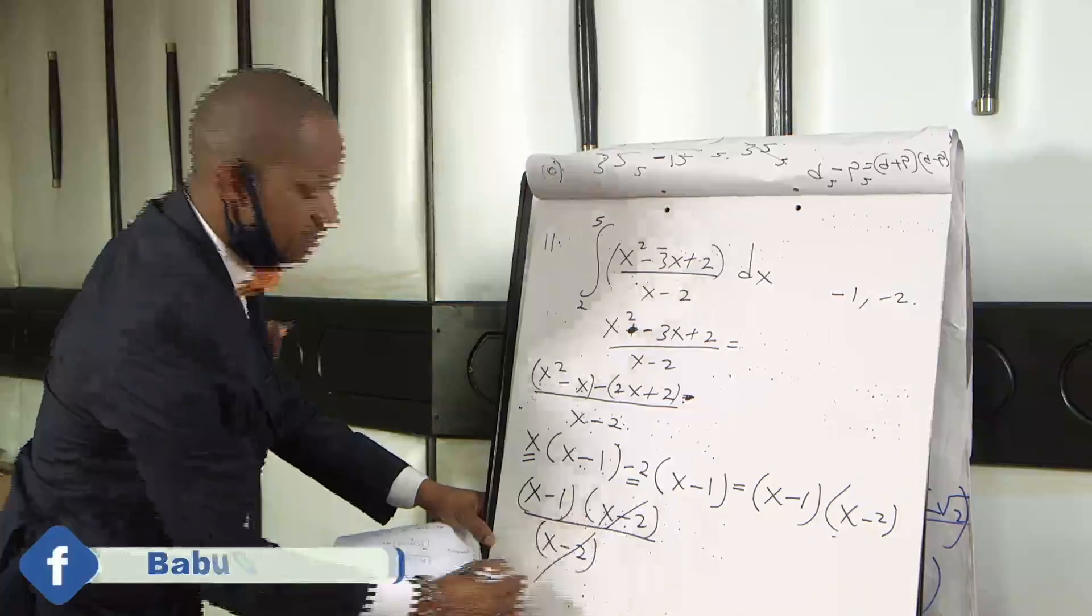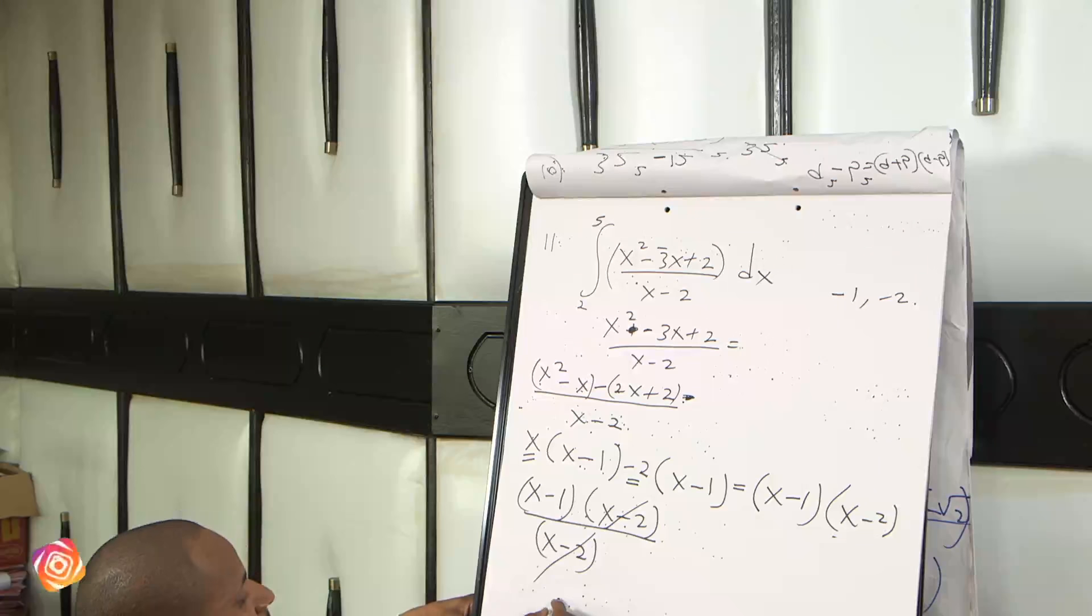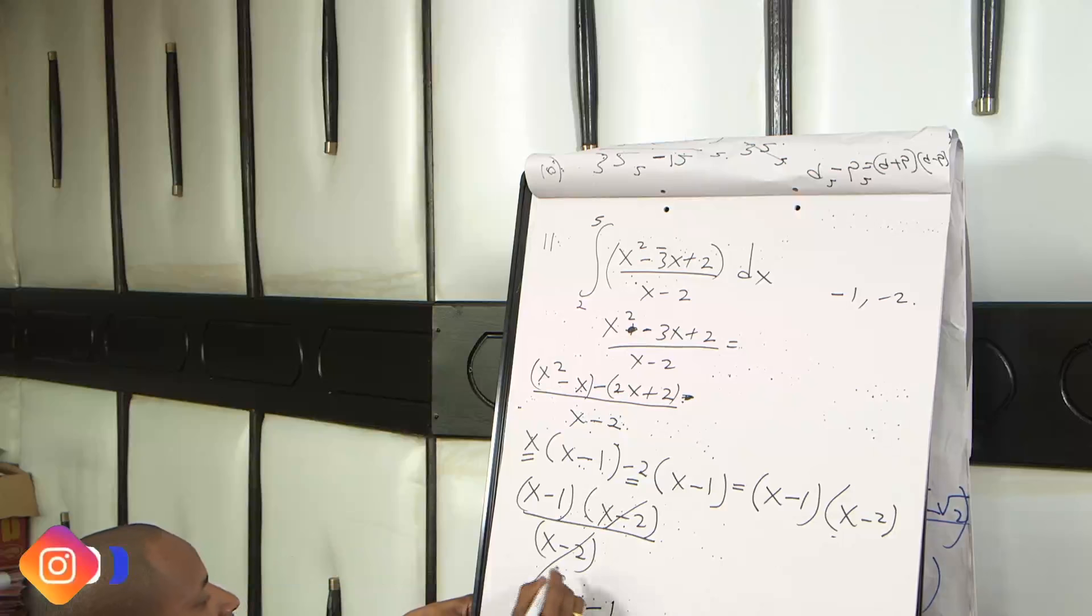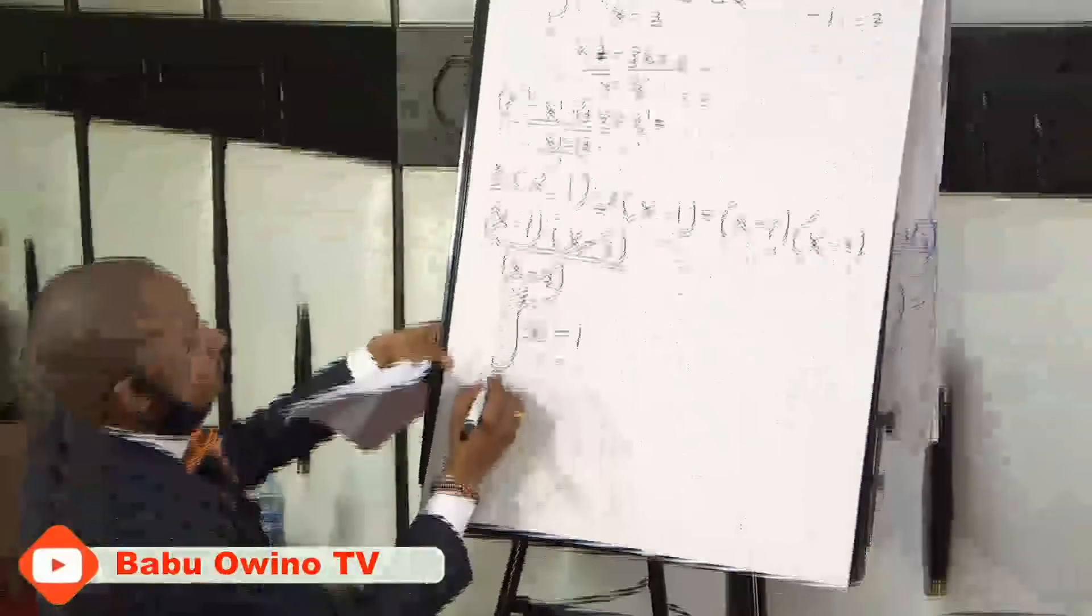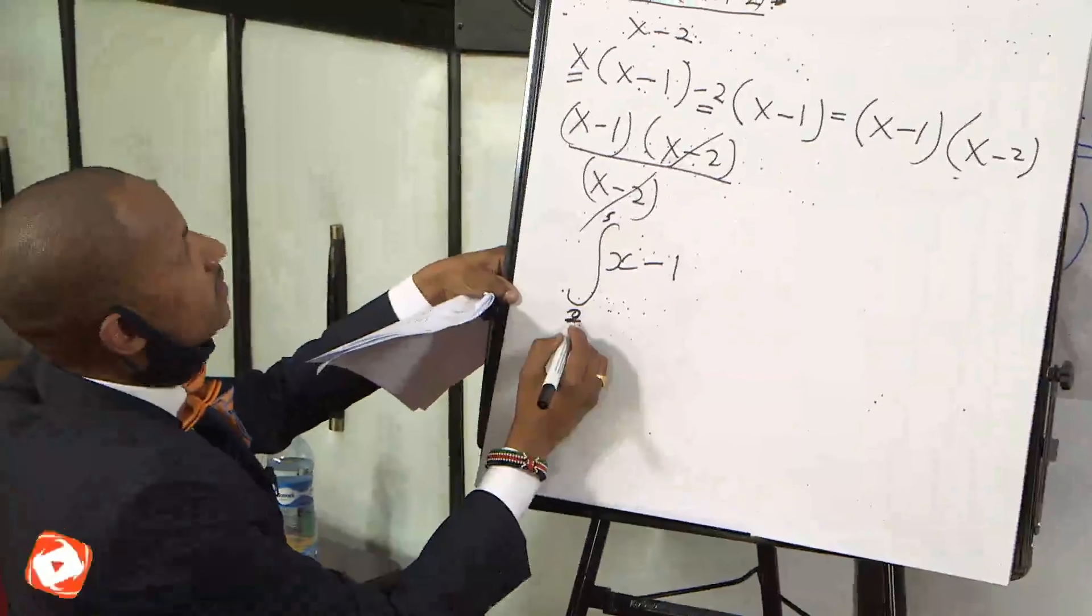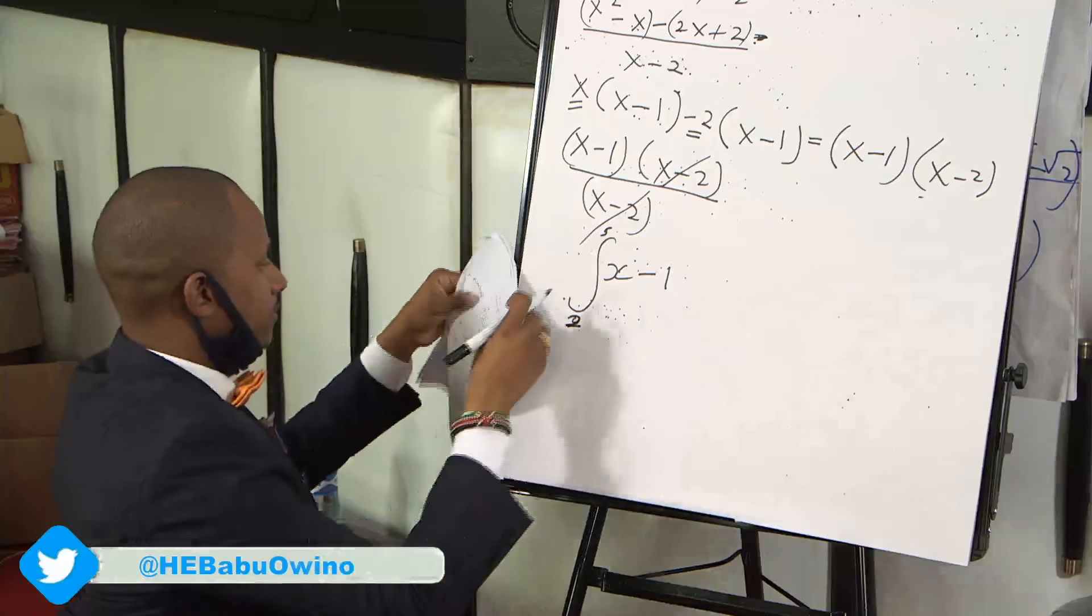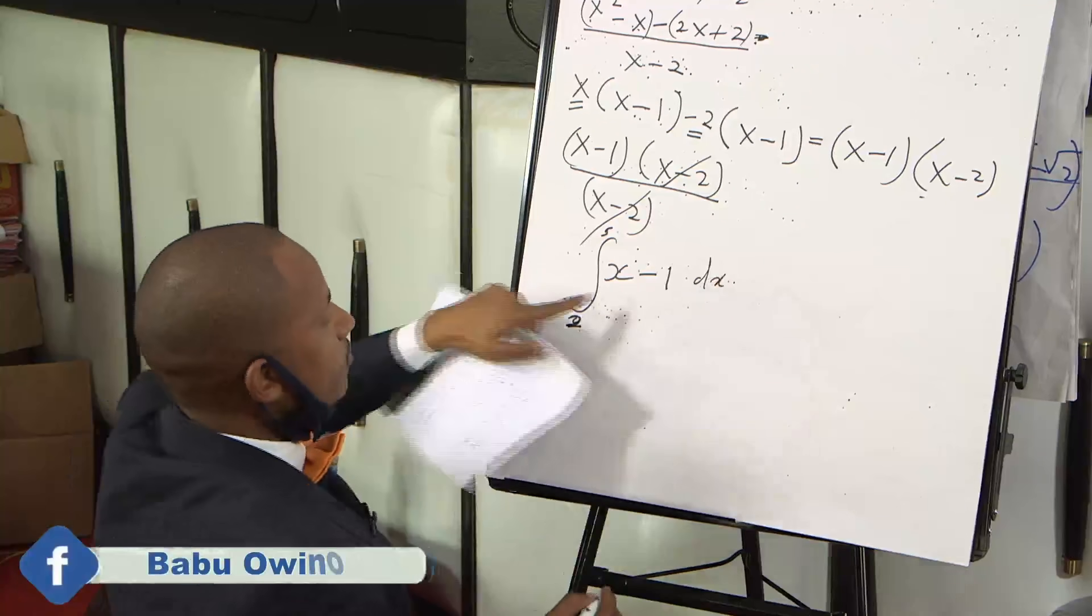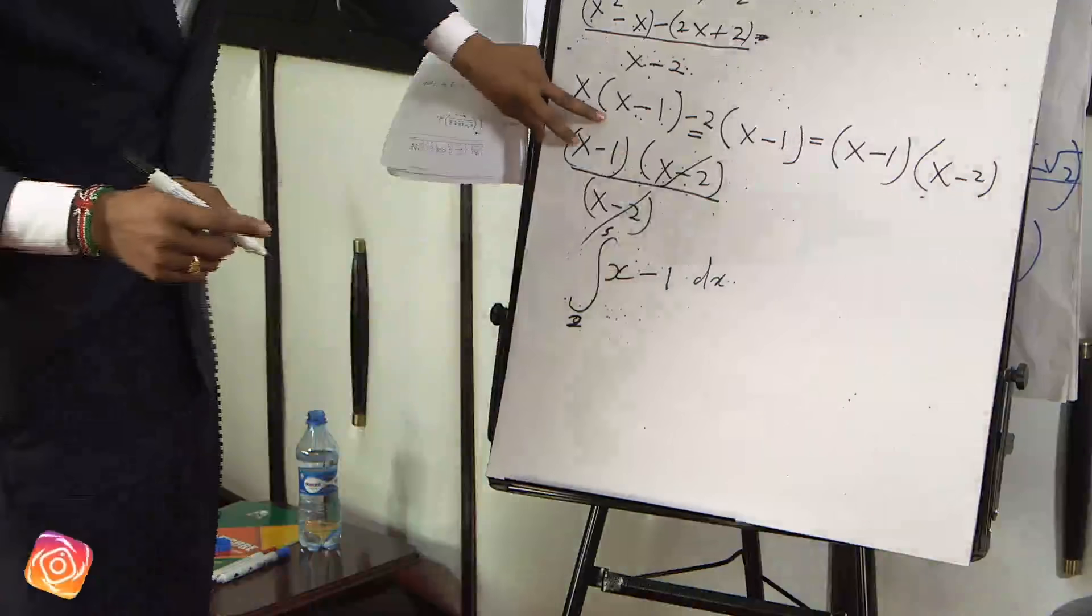So this x minus 2 and this x minus 2 cancels. So the equation that we have simplified is x minus 1. So you are told to integrate this with limits of 5 and 2. So I want to start on a fresh page on the integration.